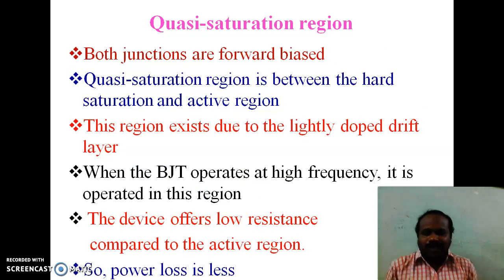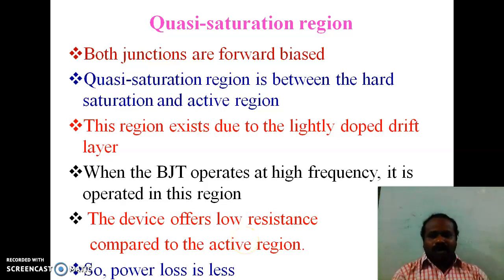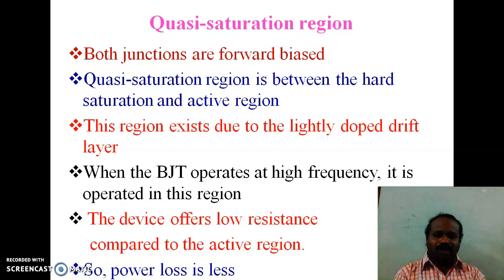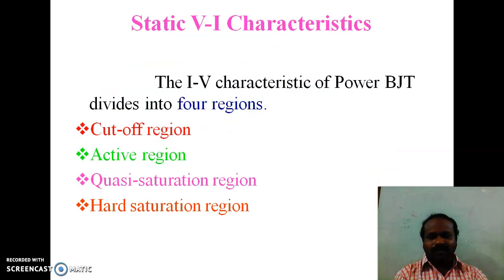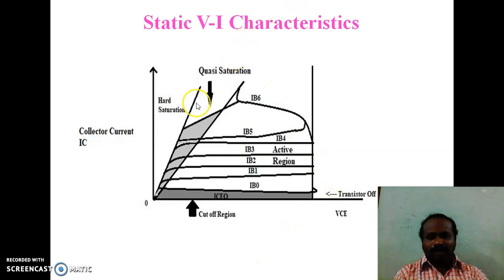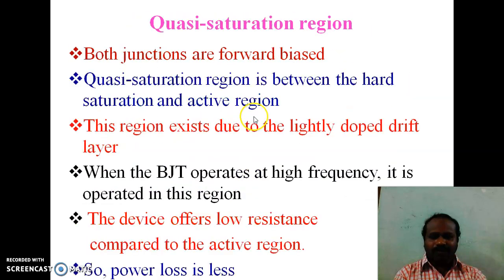Next, the saturation region. The saturation region is divided into two: quasi-saturation region and hard saturation region. In both saturation regions, both junctions are forward biased — that is, input junction and output junction are forward biased. The quasi-saturation region is between the hard saturation and active region. This quasi-saturation region exists due to the lightly doped drift region. When BJT operates at high frequency, it is operated in quasi-saturation region.